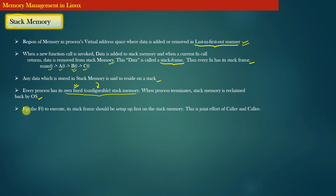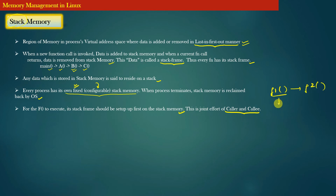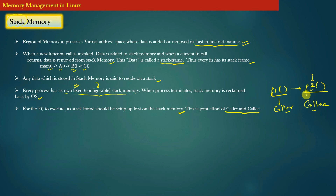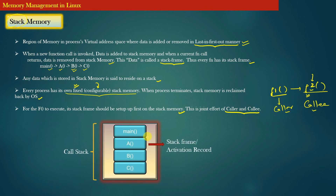For a function to execute, its stack frame must be set up first on the stack memory. Setting up the stack frame is a joint effort of the caller and the callee. If function F1 invokes function F2, then F1 is called the caller and F2 is called the callee. It is the caller's responsibility to set up the stack frame for F2 on the stack memory. Unless the stack frame is correctly set up, function F2 cannot commence its execution.